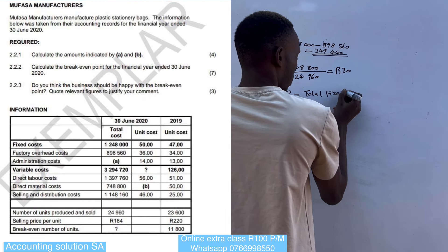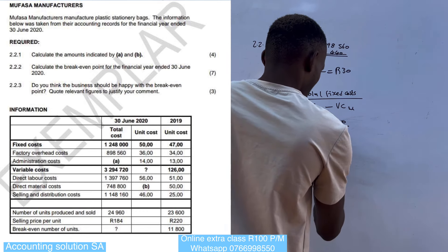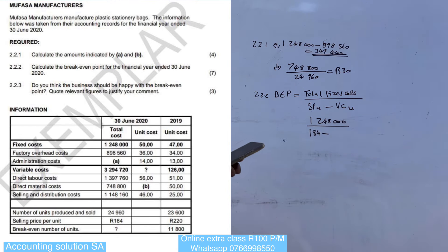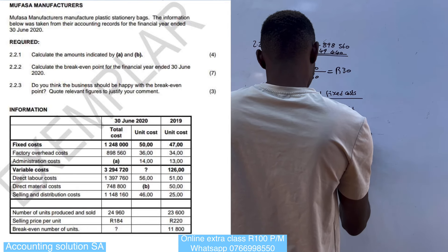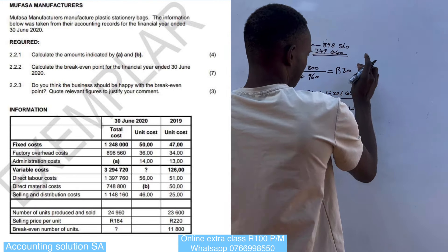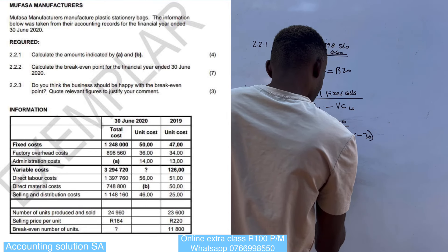We divide by selling price per unit, which is R184, minus the total variable cost per unit. We have three variable costs: R56, R46, and the R30 we just calculated. Adding those together gives us total variable cost per unit of R132. So the contribution is R184 minus R132, which equals R52. Therefore 1 248 000 divided by 52 gives us 24 000 units — that is our break-even point.